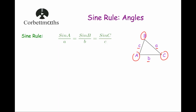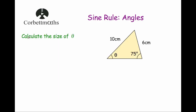So let's use that to work out some missing angles. Here we've got a question and it says: calculate the size of theta. We've got a triangle with the missing angle theta, we've got the angle 75 degrees, and we've got the length of the sides opposite those — 10 is opposite the 75 degrees, and 6 is the side opposite theta.